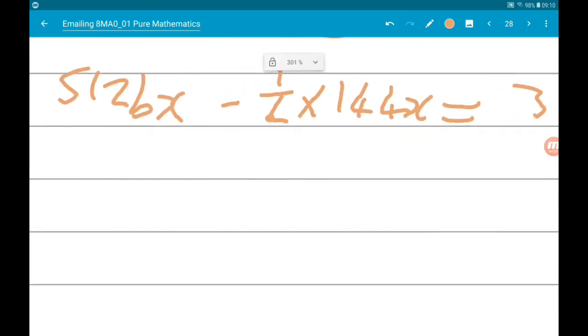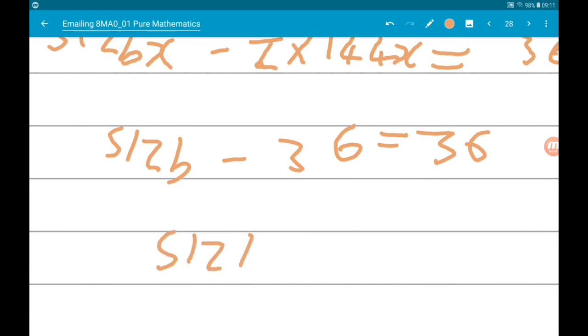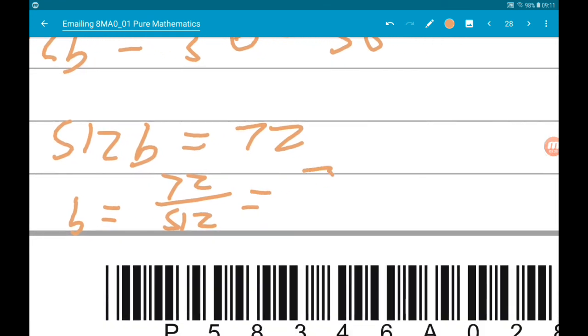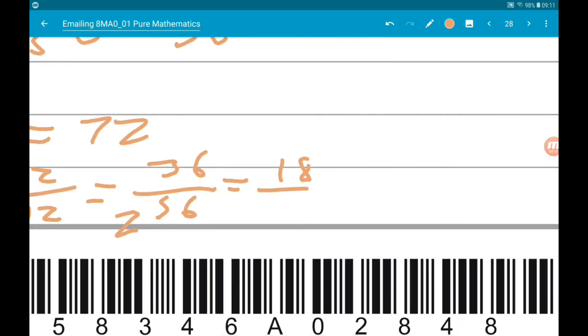If we divide by x, we get 512b minus quarter of 144 is 36. We know that has to be 36. Add 36, 512b is 72. Divide by 512, b is 72 over 512, which is 36 over 256, which is 18 over 128, which is 9 over 64.